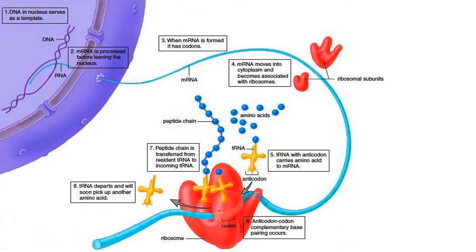As the ribosome moves along the chain, it reads the next three bases, and a different tRNA molecule comes along with its amino acid and sits next to the previous one. Gradually, amino acids sit next to each other, and because of their chemical preferences, they join up into a big molecule by forming peptide bonds between them. All that the DNA is doing is bringing the right amino acids into the right order to grow this chain. All of the amino acids in the picture are represented by blue circles, but they can all be different to each other, joining up to make the protein.